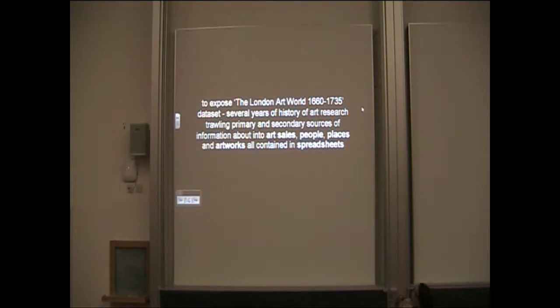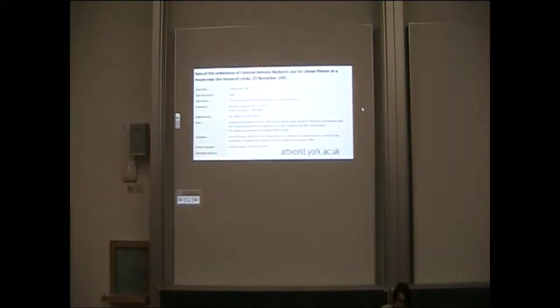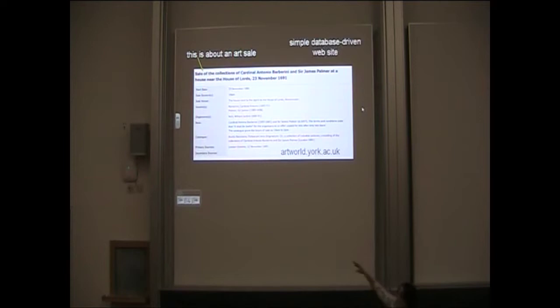So this is a dataset called the London Art World. There's been a chap researching this for several years. He's got about 10 years worth of work ahead of him, and he's looking at the art market in this period. So it's not so much about who was painting it—it's what was happening to artwork, who was buying it, who was selling it, who died and left it to people. This is what we put on the web. It's a simple database-driven website that presents information about art sales and all those other things, the people and the places.